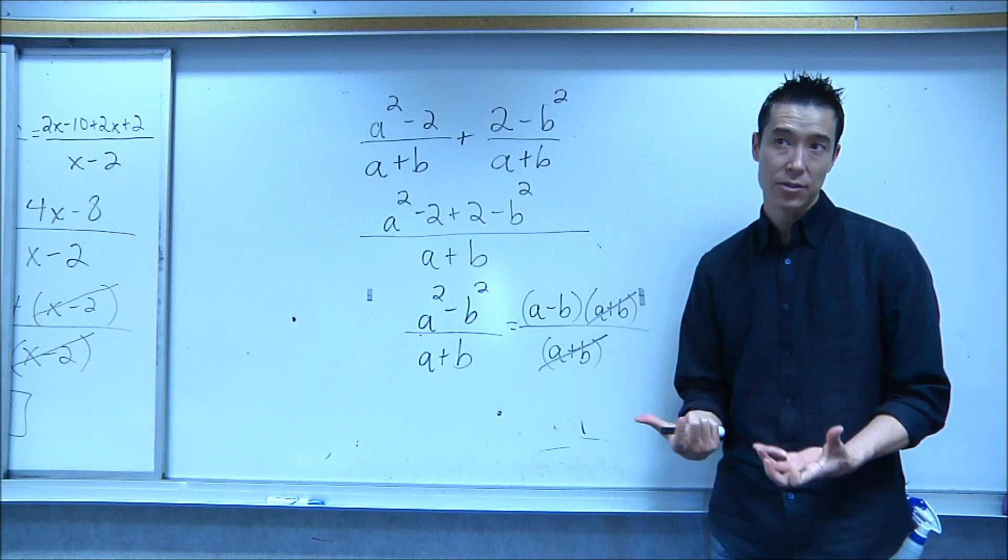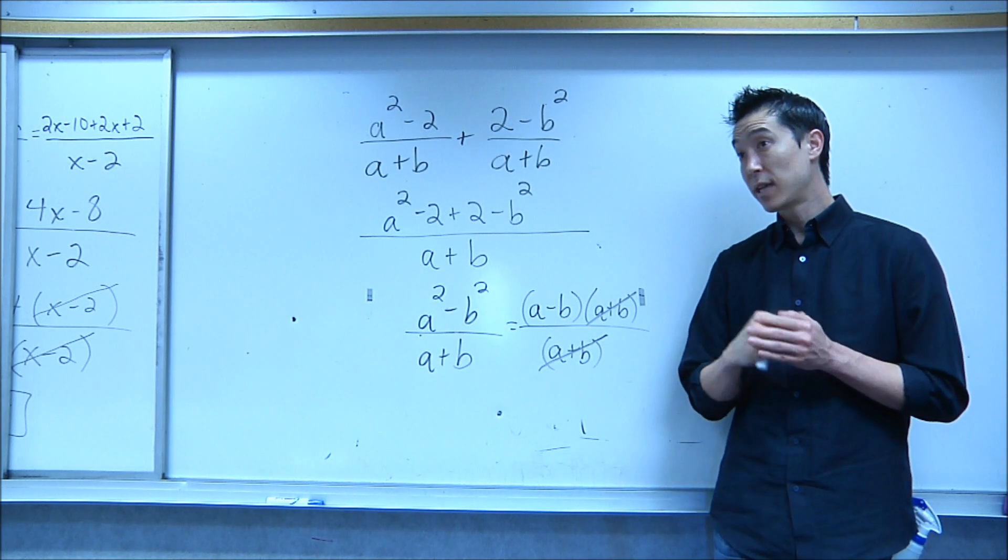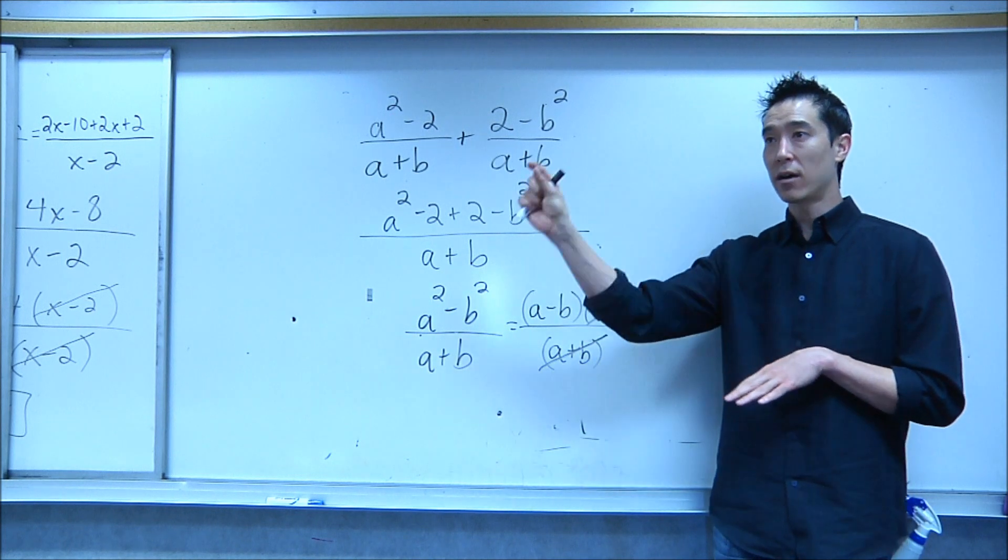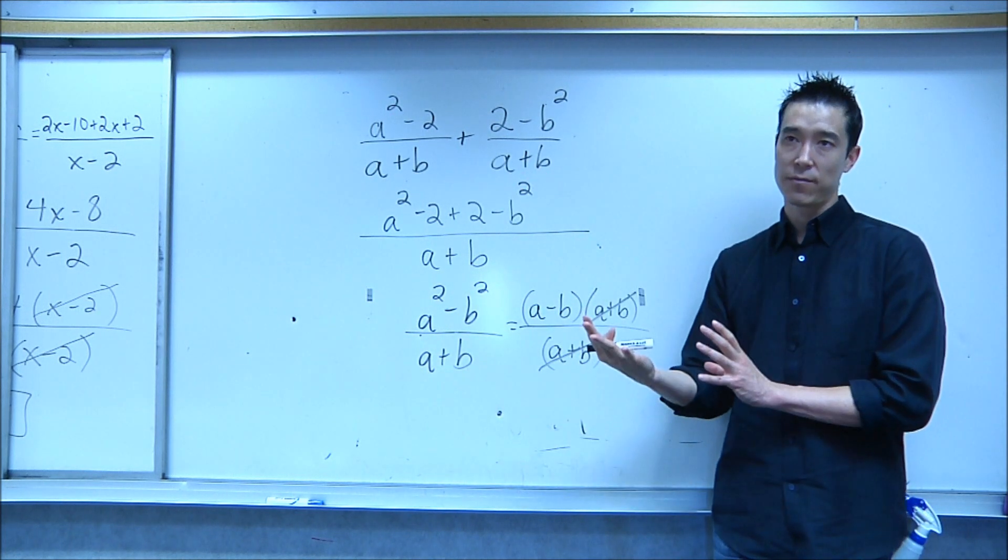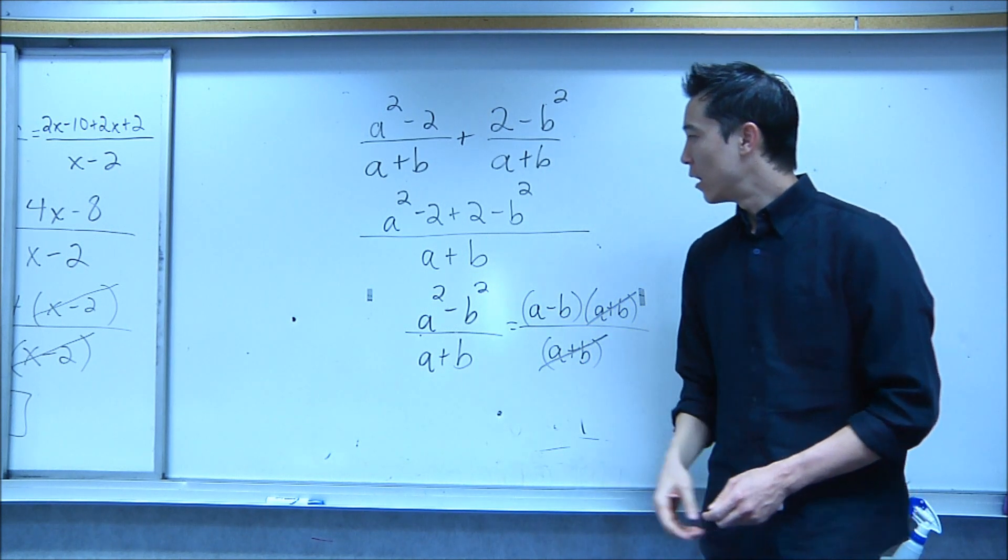So your overall answer for that one was just a minus b. That is adding rational expressions. That's pretty easy. To add rational expressions for the same denominator, keep the denominator, combine all the terms at the top, get it down to a single fraction, and then factor and reduce. That's it.